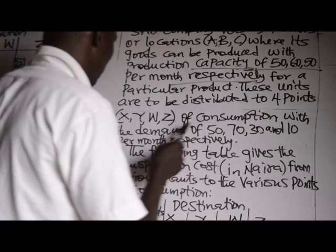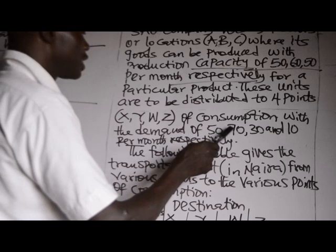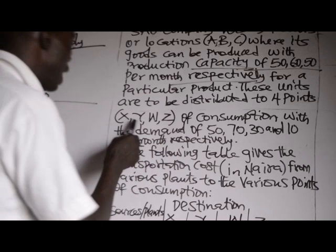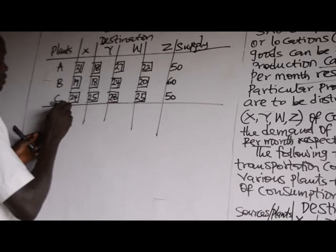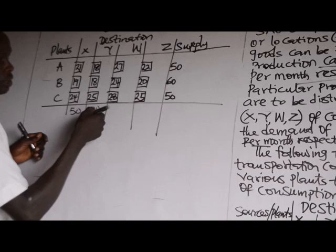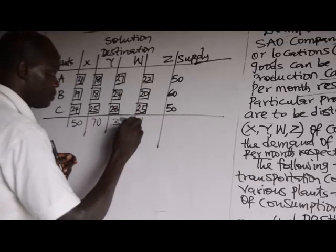These units are to be distributed to four points X, Y, W, Z with demand of 50, 70, 30, and 10 per month respectively. So X is 50, Y is 70, W is 30, and Z is 10. This is the demand.